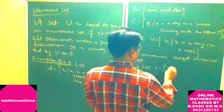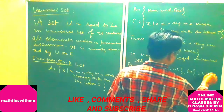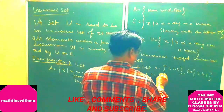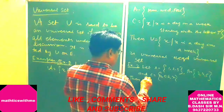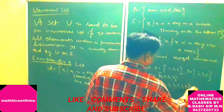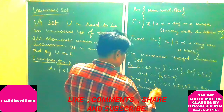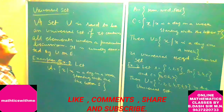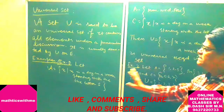Example 2: Let A = {1, 2, 3}, B = {3, 4, 5}, and C = {4, 5, 6, 7}. Then U = {1, 2, 3, 4, 5, 6, 7} is the universal set. So the set which contains all elements under a particular discussion is called the universal set. I have given you the definition and examples.